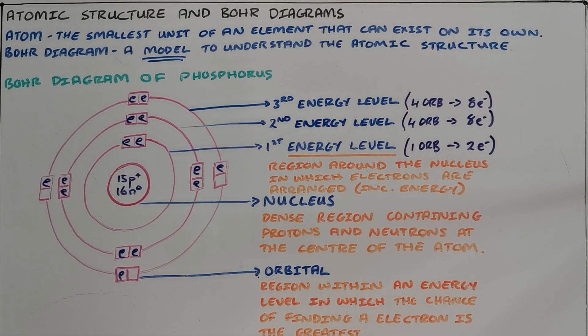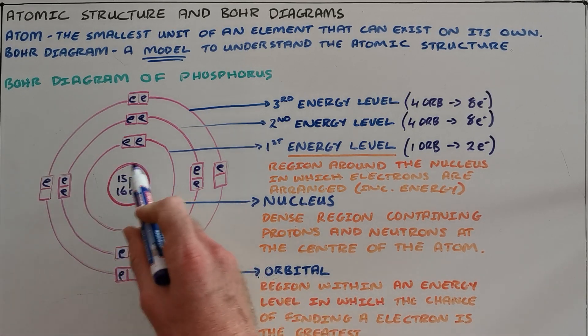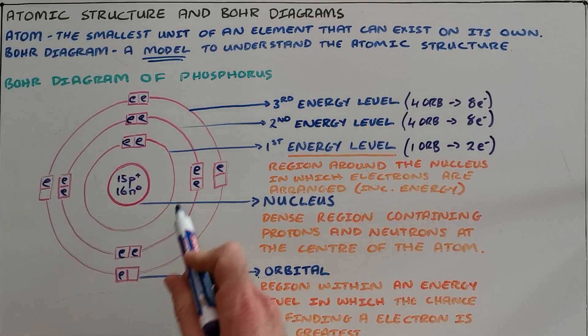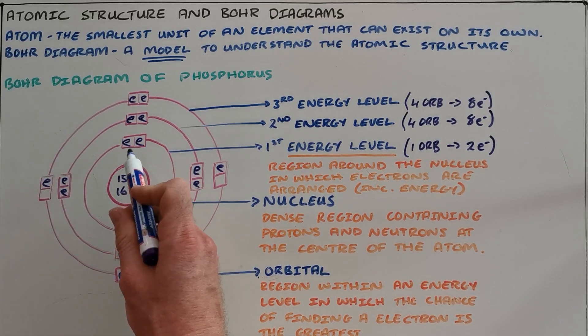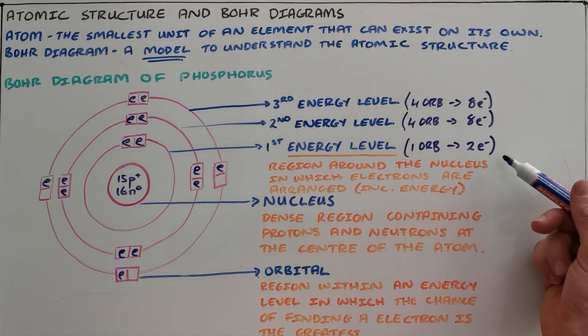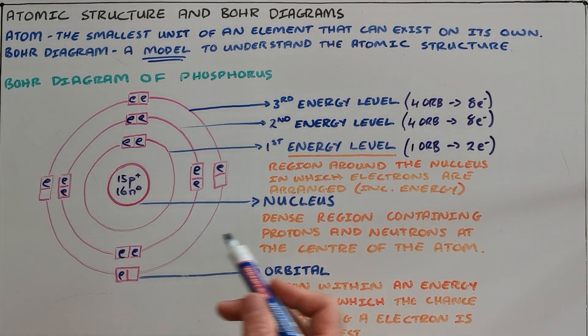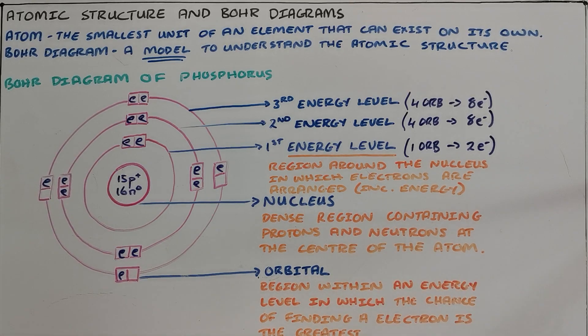Here we have now drawn a complete Bohr diagram for a phosphorus atom, where we have shown the nucleus that contains our protons and neutrons. We have shown our first energy level that has one orbital which contains two electrons. Our second energy level that contains four orbitals with a total of eight electrons. Third energy level also containing four orbitals and eight electrons.